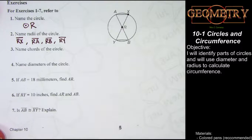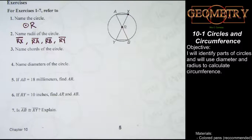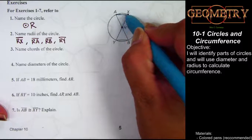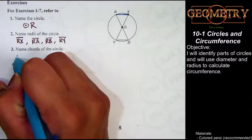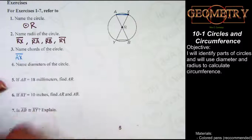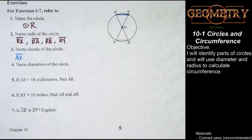Number 3 asks us to name the chords in the circle. Remember that chords are segments that go from one edge of the circle to another edge of the circle. They can pass through the center, they don't have to, but they are allowed to. We see this line right here goes from A to X — that would be one chord in our circle because it goes from edge to edge, so we can name this chord AX. Pause the video now to attempt to find and name the chords in the circle, and when we come back we'll reveal the rest of the answers.